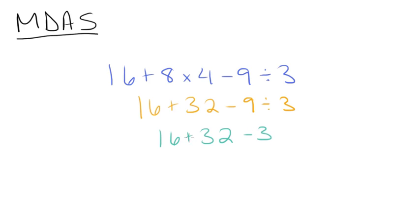From here, simplify addition and subtraction in order from left to right. So we're going to add 16 and 32, which is 48. So we'll have 48 minus 3. And finally, we subtract 3 from 48 and get our final answer of 45.